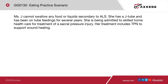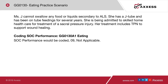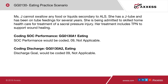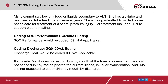Another scenario: Mrs. J cannot swallow any food or liquid secondary to ALS. She has had a J-tube and has been on tube feedings for several years. She has been admitted to skilled home health for treatment of a sacral pressure injury, and her treatment includes TPN to support wound healing. The start of care performance for eating would be coded 09, not applicable — and the discharge goal as well, since Mrs. J does not eat or drink by mouth and did not do so prior to the current illness, and is not expected to by discharge.